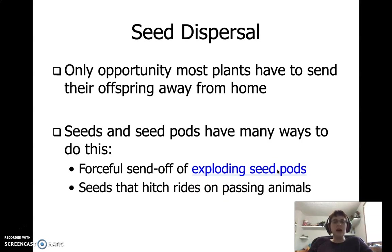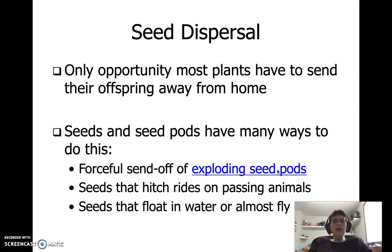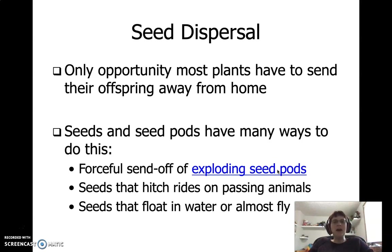There are seeds that hitch rides — you may have experienced this with your dog or your shoelaces while hiking. Things like burrs and tick seeds get tangled up in shoelaces or a dog's fur; they've got little hooks so they can be carried around. Then there are seeds that can float, like coconuts. And you're probably familiar with flying seeds — if you've ever blown on a dandelion, those have a little tuft so they can fly. And then there are helicopter seeds like maple seeds, the ones that spin when they fall. Ash and several other tree species have those types of seeds as well.